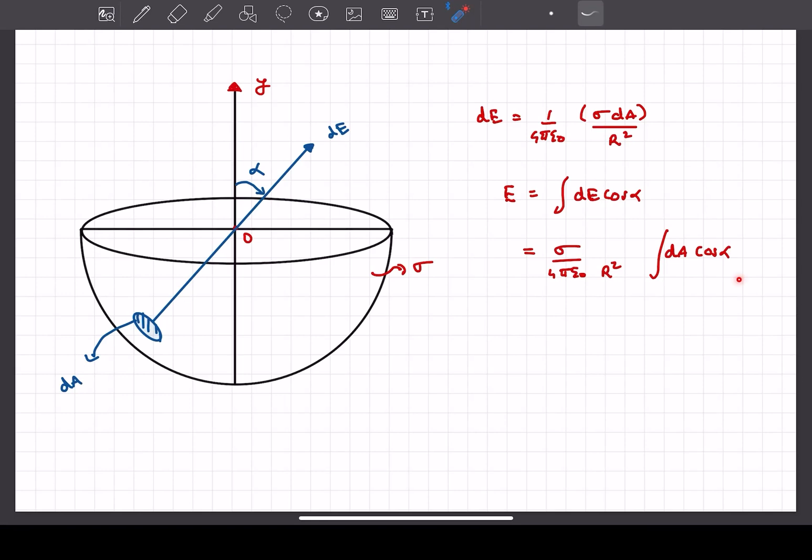Now this integral of dA cos alpha is a pretty interesting term. If you project the dA area onto the flat surface of the hemisphere, then the small area element that you get on the surface is actually dA cos alpha. Because this is the dA element, the horizontal projection of this area is simply going to be dA cos alpha.